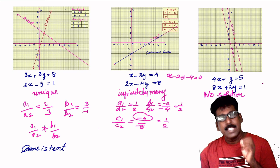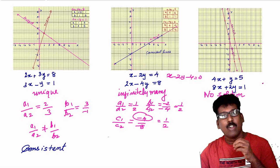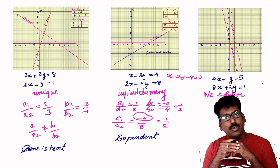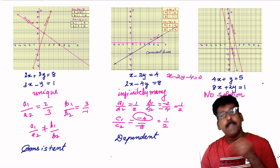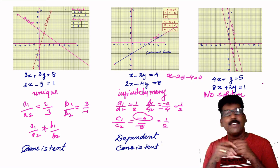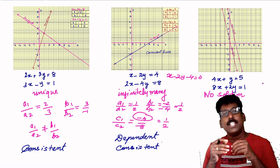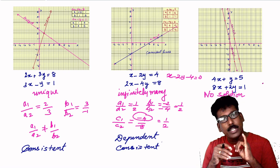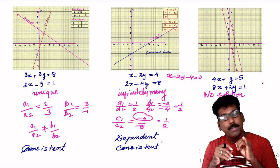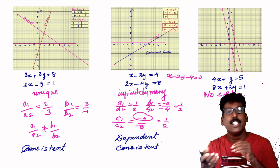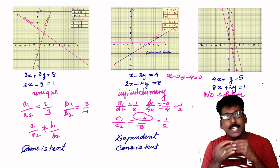In this case the pair of linear equations is called a dependent pair of linear equations. A dependent pair of linear equations is always consistent. So a pair of linear equations in two variables will be consistent if a1 by a2 is not equal to b1 by b2, or if a1 by a2 equals b1 by b2 equals c1 by c2. In both cases the equations are consistent.